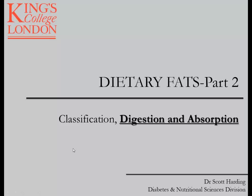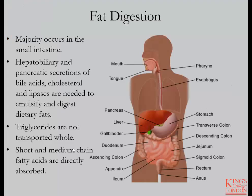Part 2 of this set of slides is going to cover digestion and absorption of fats. This includes triglycerides, fatty acids, as well as sterols. Generally, when we talk about fat digestion, we're going to focus primarily on the small intestine. This is where the majority of fat is digested and absorbed in a normal adult human.